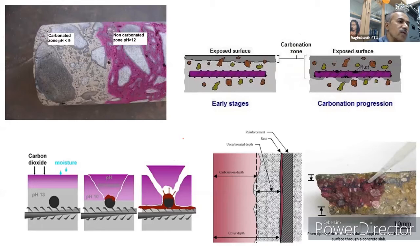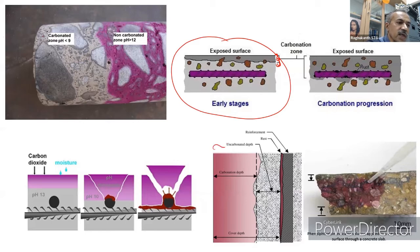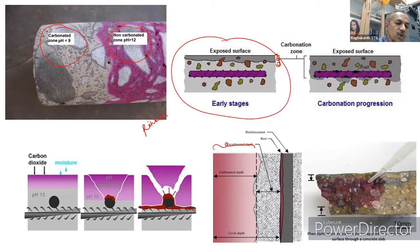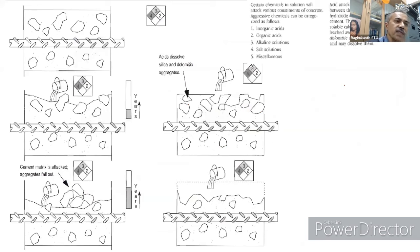Carbonation depth — how far CO₂ has penetrated into concrete — can be measured using a phenolphthalein solution. When sprayed on concrete, the non-carbonated zone turns pink while the carbonated zone retains its original color. This test identifies how deeply carbonation has progressed in the structure.